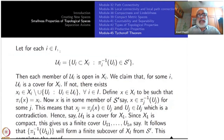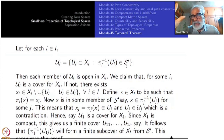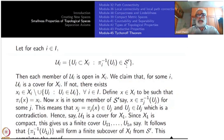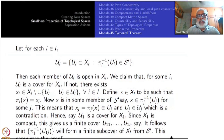For each i, put U_i equal to those Ui inside Xi such that Pi-inverse of Ui is in S-prime, where S-prime is the cover that we have chosen. So U_i is the subfamily of open subsets of Xi whose preimages under Pi appear in S-prime. Each member of U_i is by definition open in Xi.